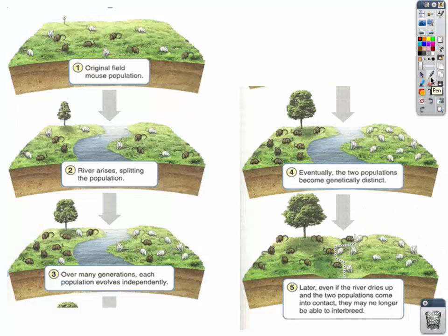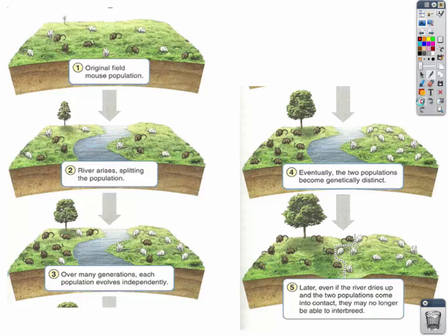Here's one more example. You have an original field mouse population — some white and some brown. A flood geographically isolates them. It's not good for survival and reproduction to be white, so that mouse will die off. Over time you end up with a population that is different — the brown species on one side, the white species on the other — and they become genetically distinct. Even if the river dries up and they're reintroduced, they are no longer able to interbreed, making them two different species.